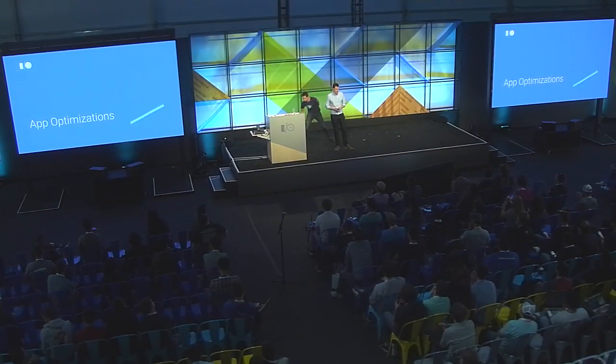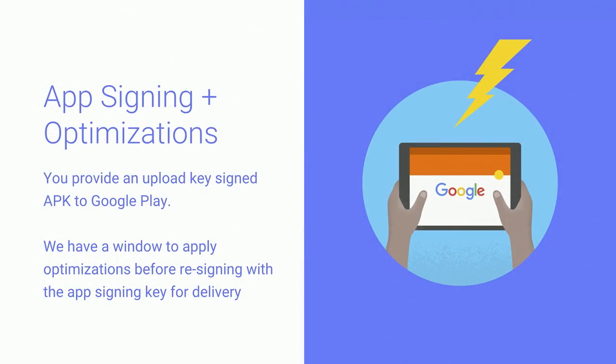Now over to James to talk about what enrolling in Google Play app signing enables us to do for your app. So, once Google Play signs your app, we can also start to provide optimization services at your request. You provide us an APK signed with the upload key. We verify your identity and then remove that signature. There is now a window of opportunity before that APK is signed with your app signing key where we can apply optimizations to your app. We want to use this opportunity to provide services to developers — think about it as applying the power of Google and Android best practices to your app.